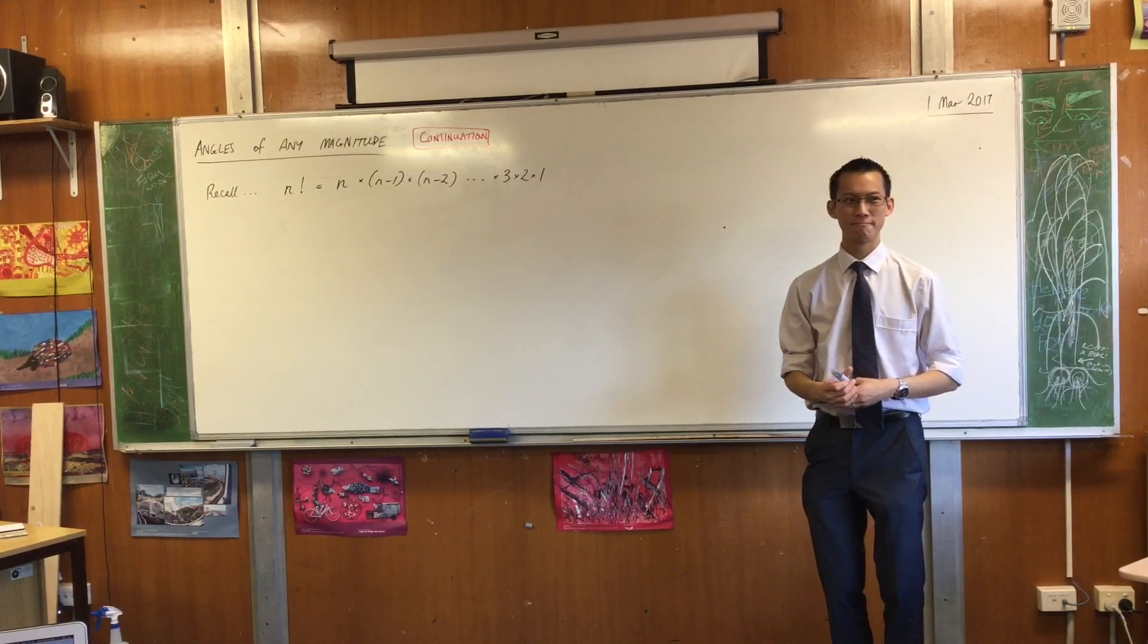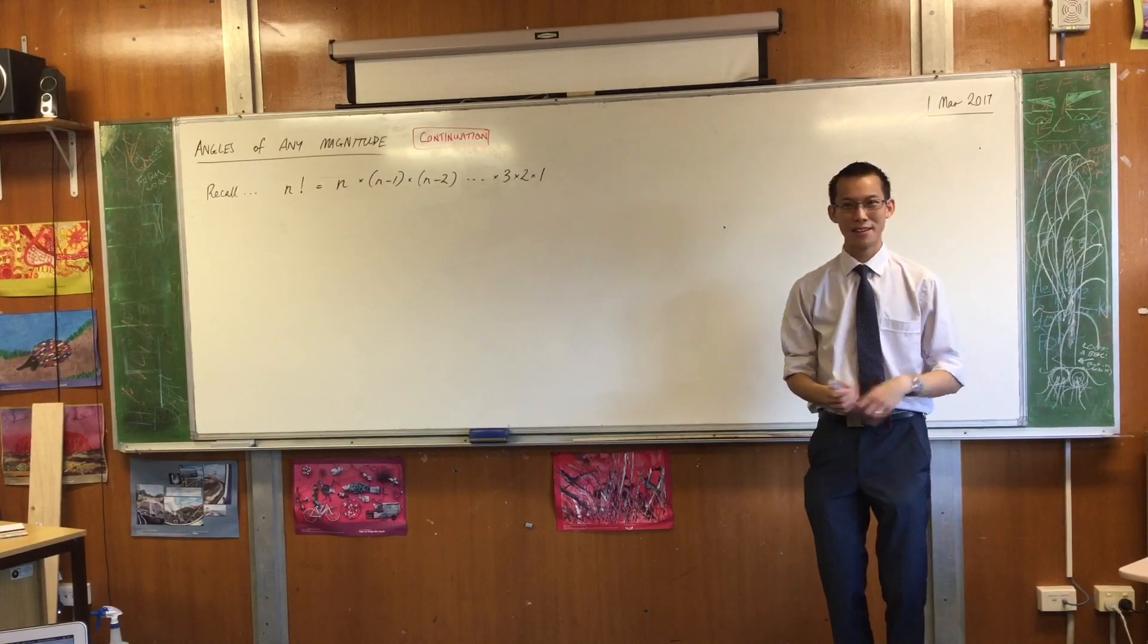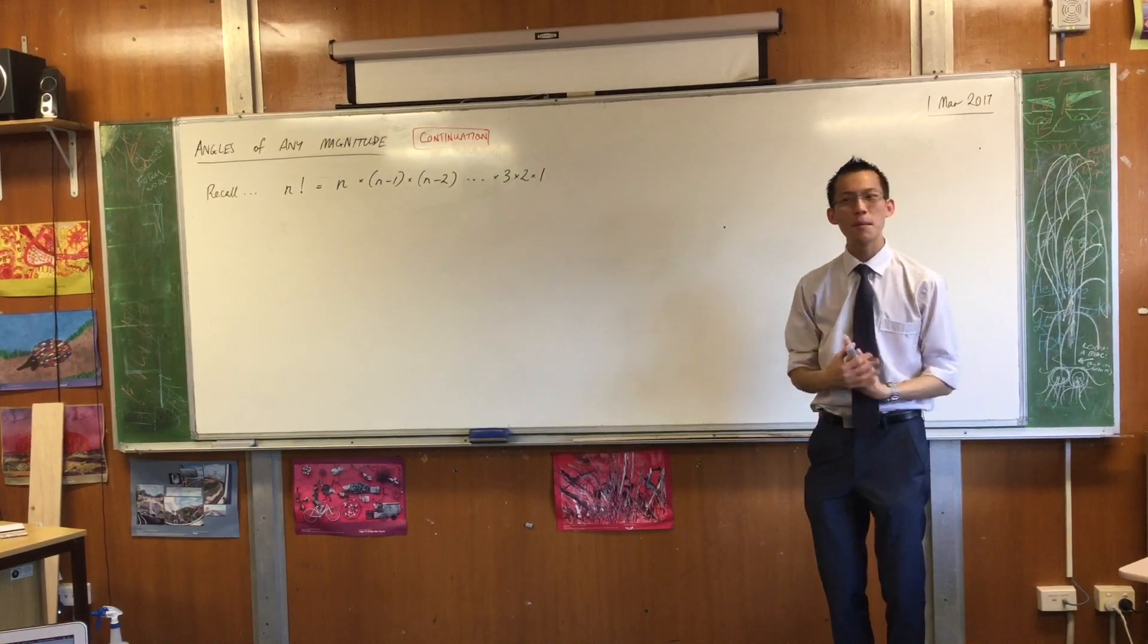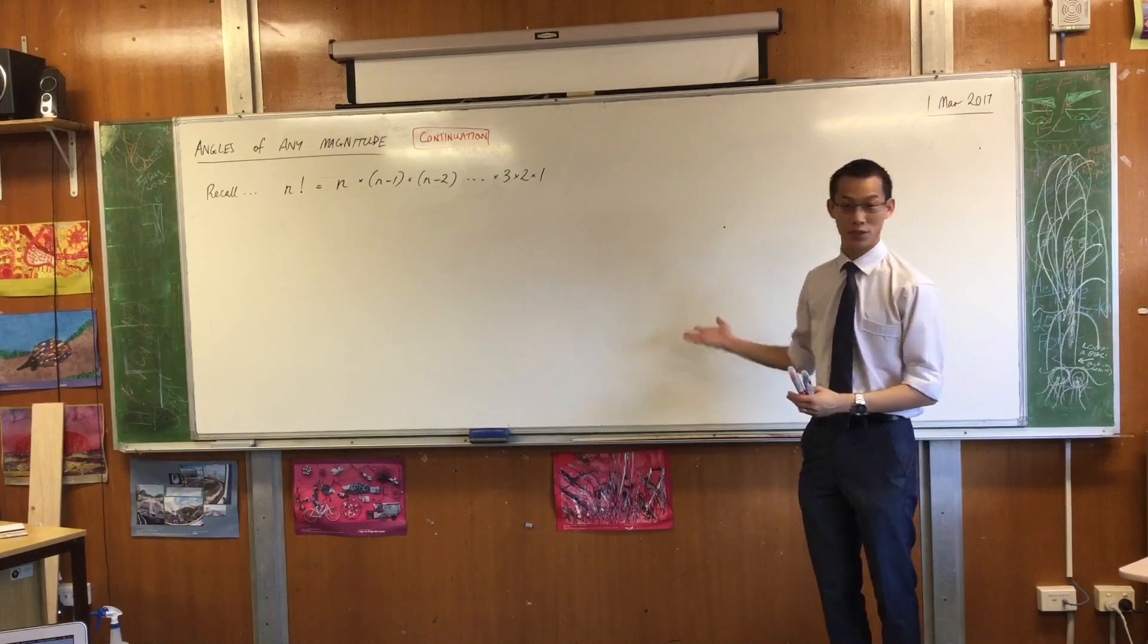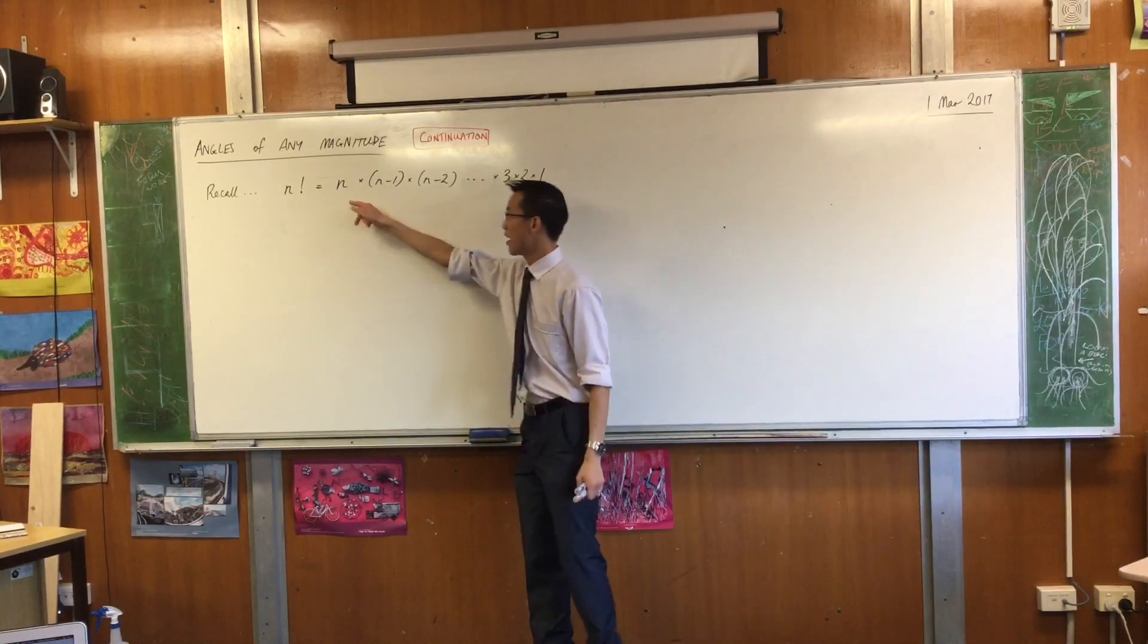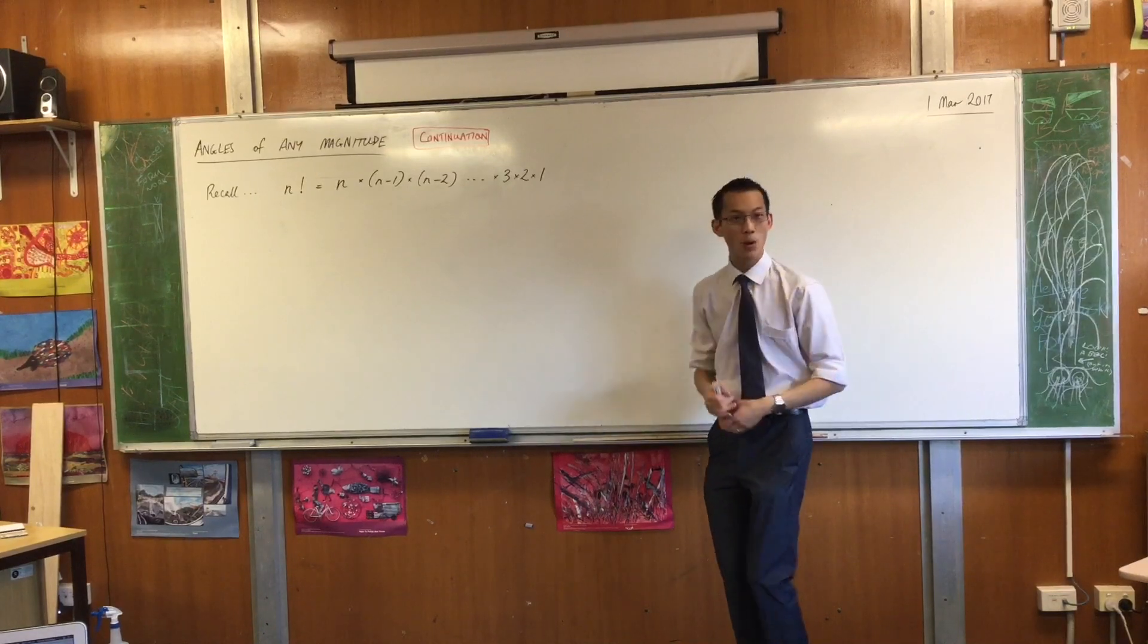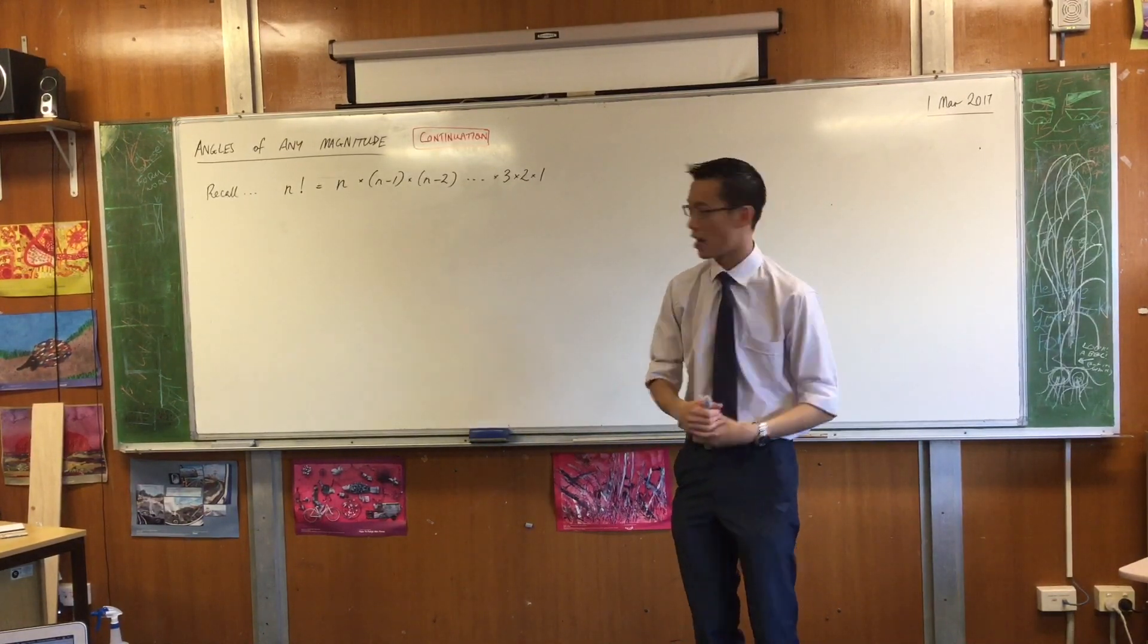This is where we began with the factorial function. And if you put in numbers like 5, or 10, or 100, it behaves just fine, right? 5 times 4 times 3 times 2 times 1. It's like, cool, this is what we would call a well-defined function. It makes sense, we understand how it works.